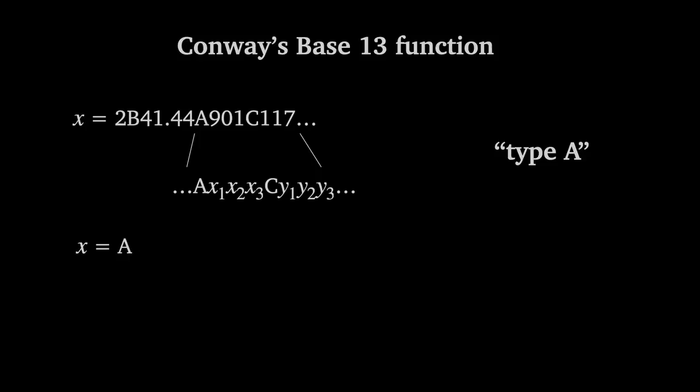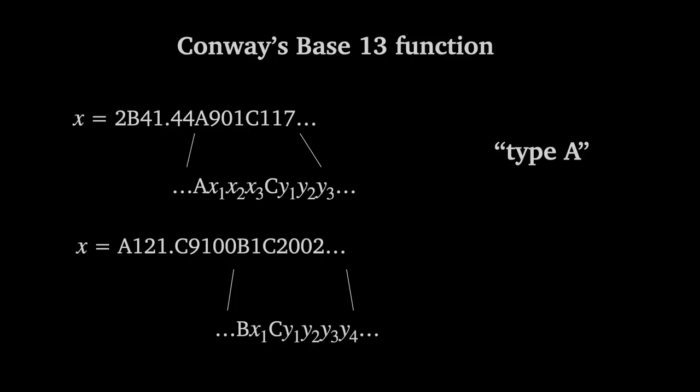Similarly, if we have a number which at some point has a sequence of digits starting with B, then a sequence of digits 0 through 9, then a C, which is followed by only digits 0 through 9, then we call this a type B number.